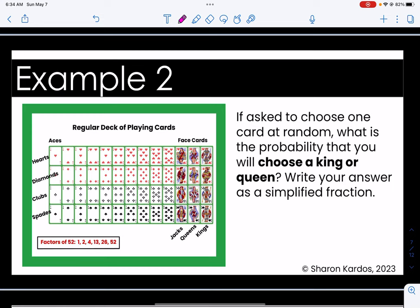Example number two says if asked to choose one card at random what is the probability that you will choose a king or queen? A king or a queen. Well I know I have four queens and I have four kings right here for a total of eight out of 52. Remember our denominator for today is 52 every single time because there are 52 cards in the deck.